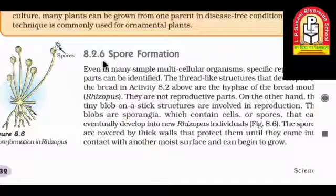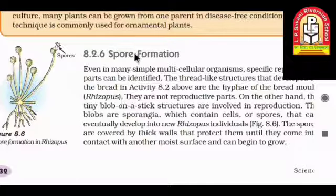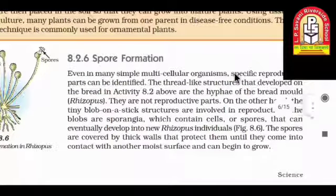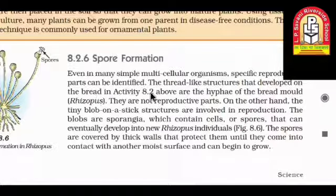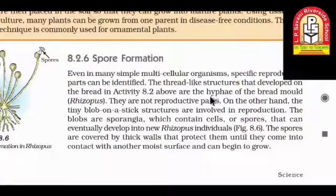Our next topic, 8.2.6, is spore formation, which you may have studied in standard 7. Even in many simple multicellular organisms, specific reproductive parts can be identified. The thread-like structures that develop on bread mold in Activity 8.2 are the hyphae of the bread mold Rhizopus. Those thread-like structures we observe in the activity are Rhizopus, also called hyphae — both terms are applicable.